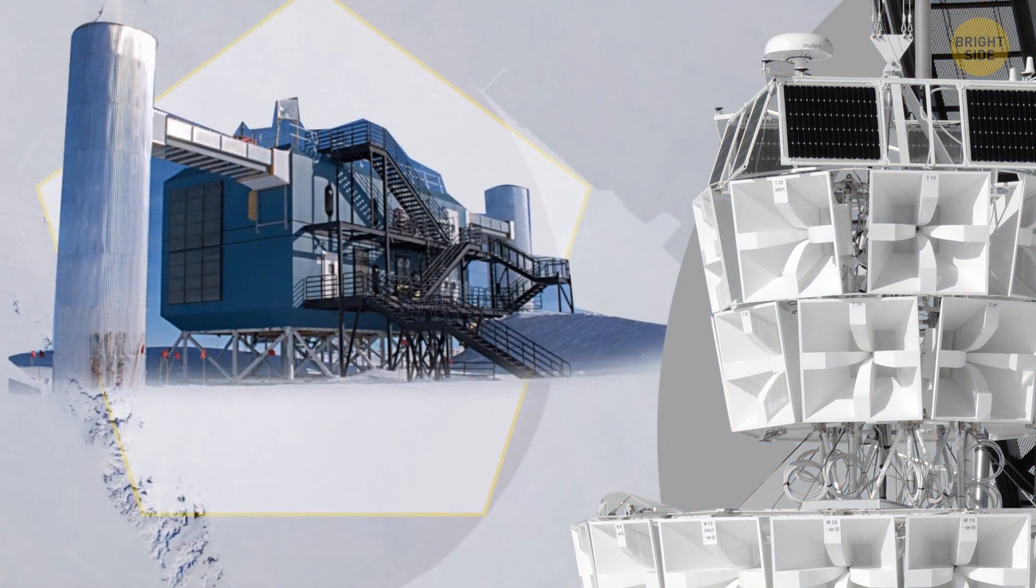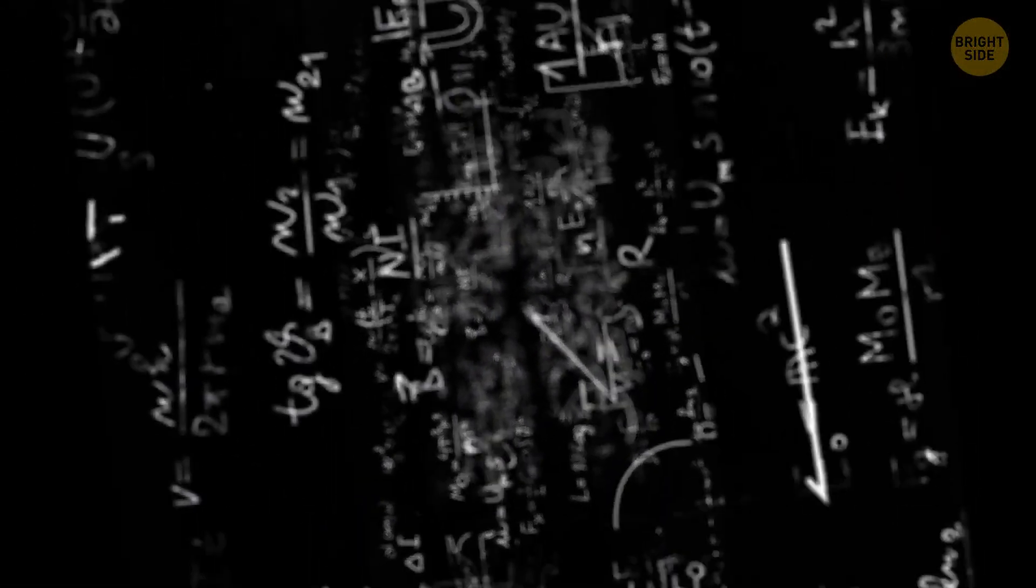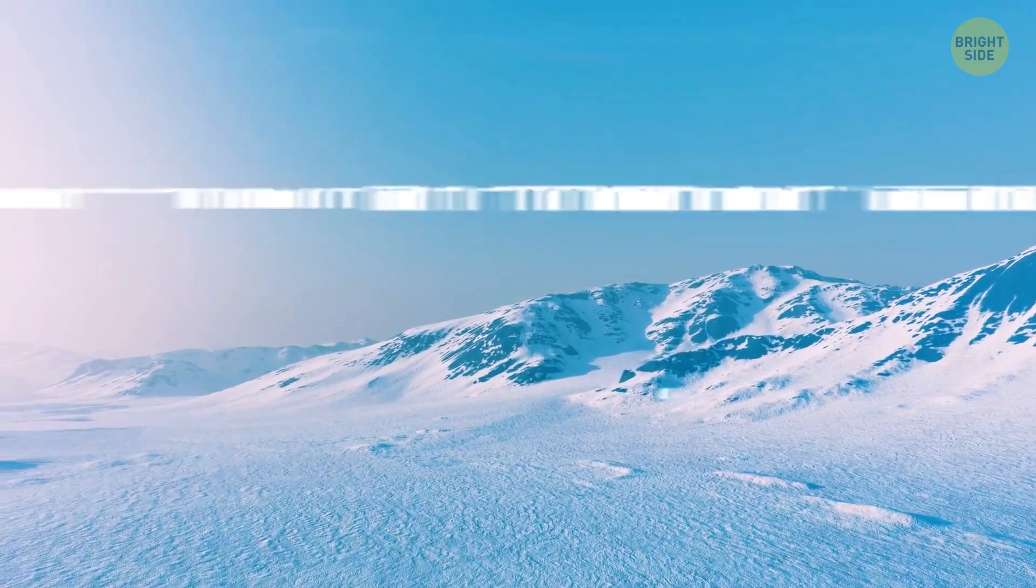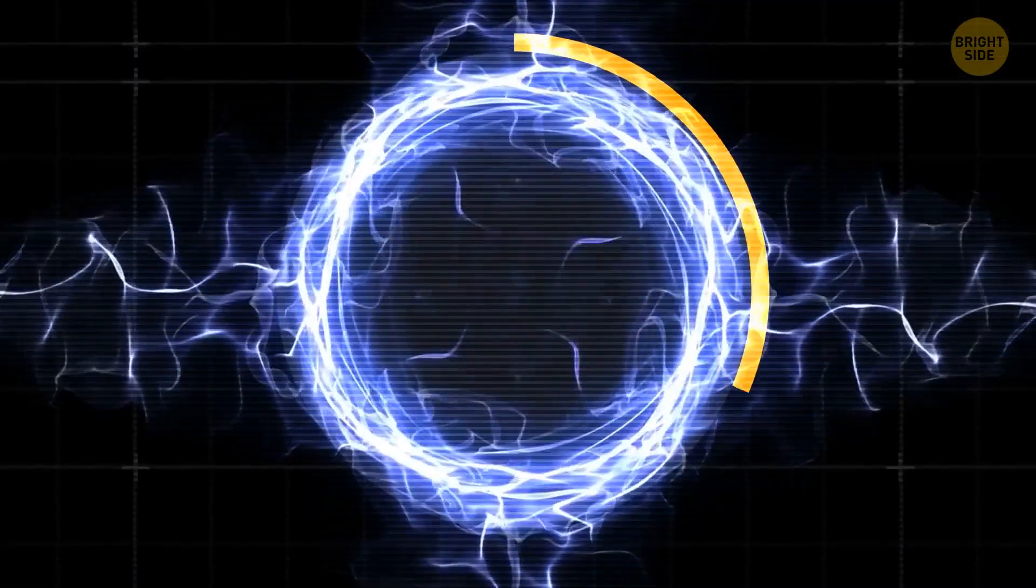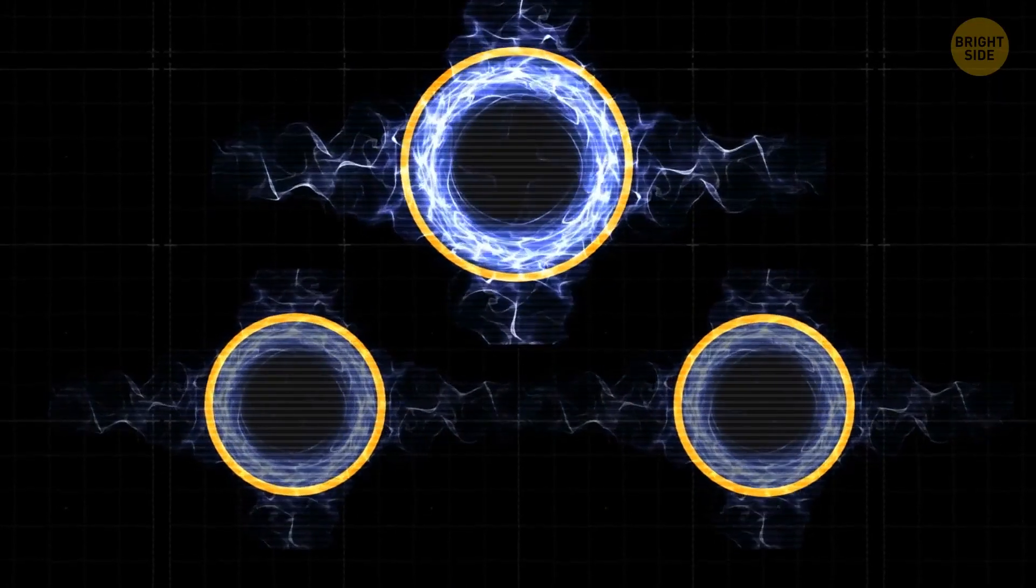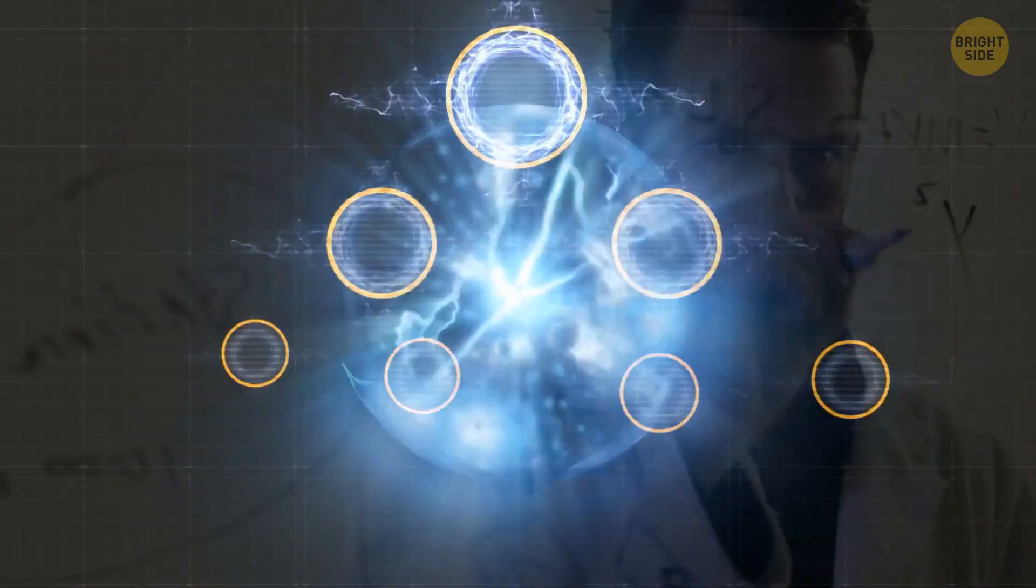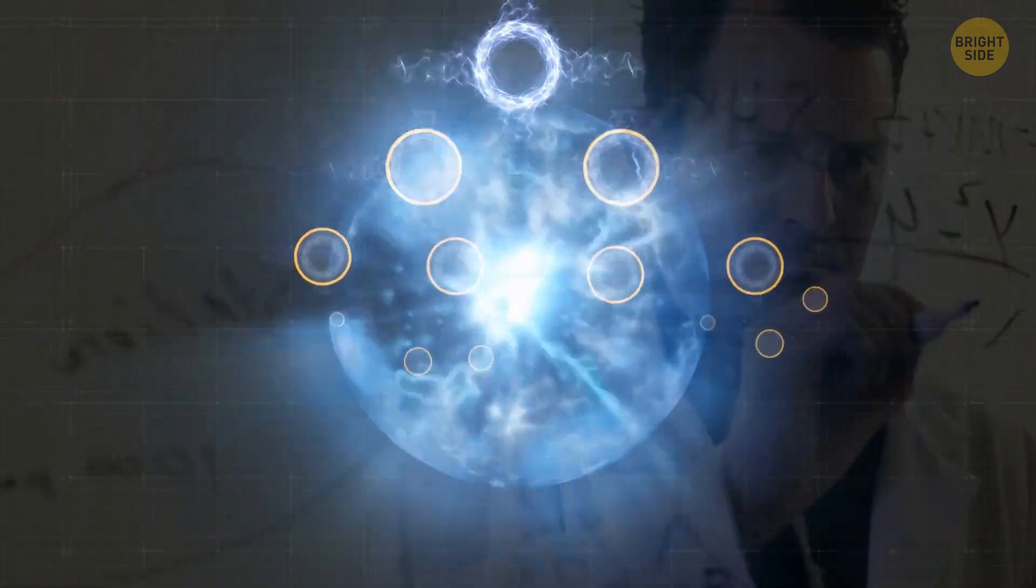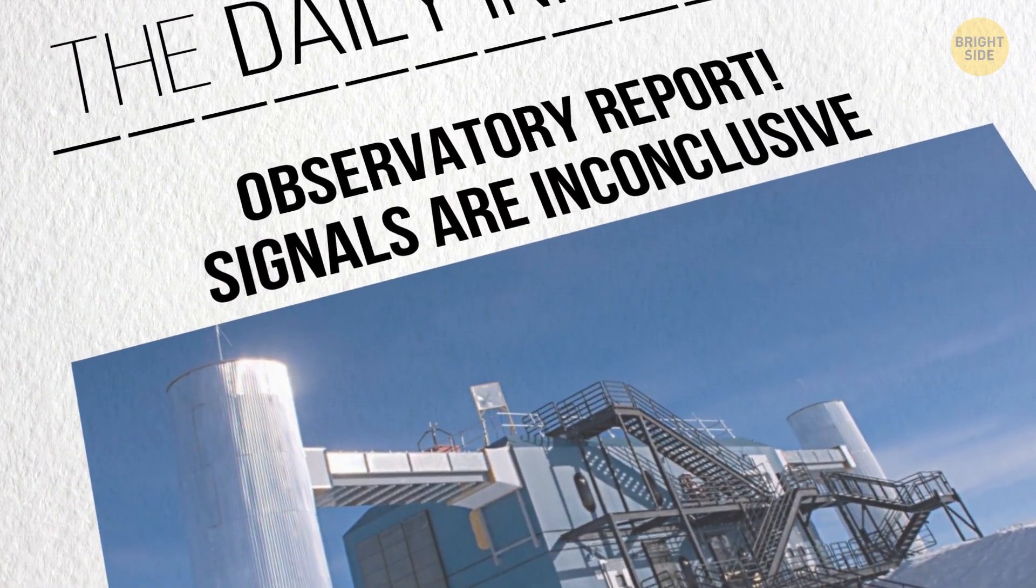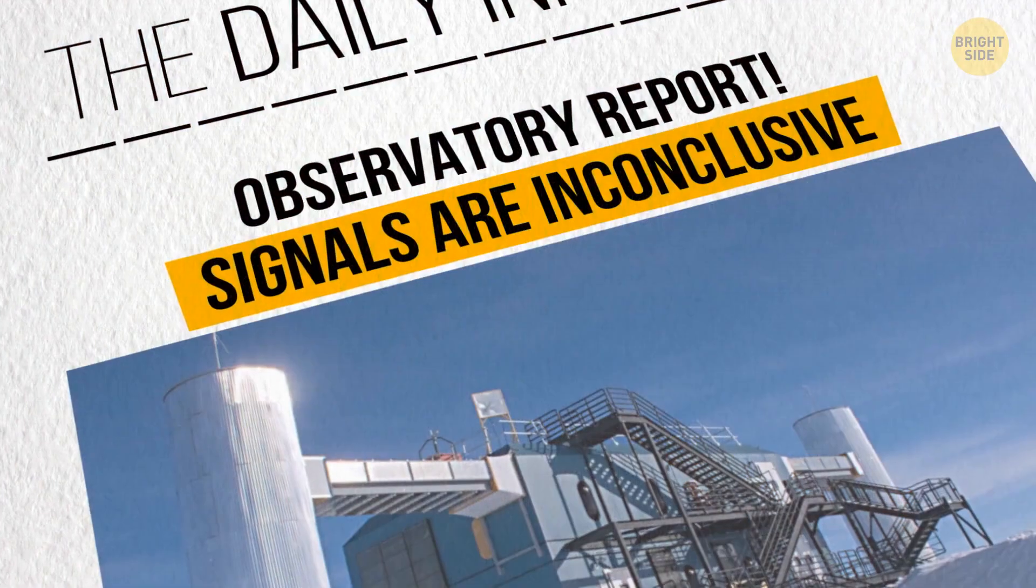ANITA researchers were like, 'Hey guys, we found some strange radio signals. Could you please check where they come from?' 'No problem,' IceCube replied and started their research. And as a result, they found nothing. Yep, IceCube didn't detect any signal sources at all. It turned out that these strange particles had basically appeared out of nowhere. How could this be? Scientists tested many different theories, but none of them could explain the situation accurately.